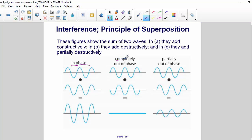They add destructively when they are completely out of phase, so that a crest lines up with a trough and a trough with a crest.